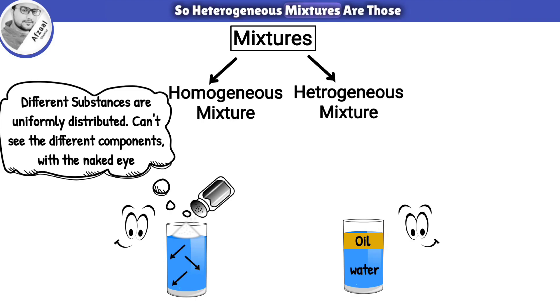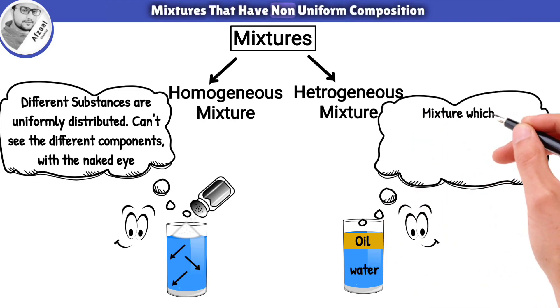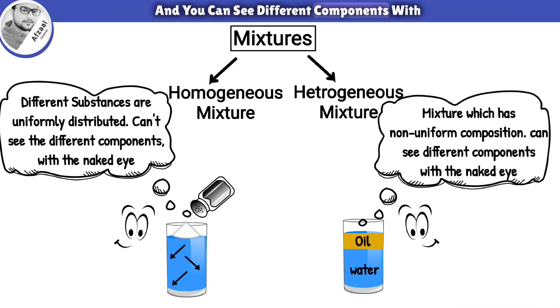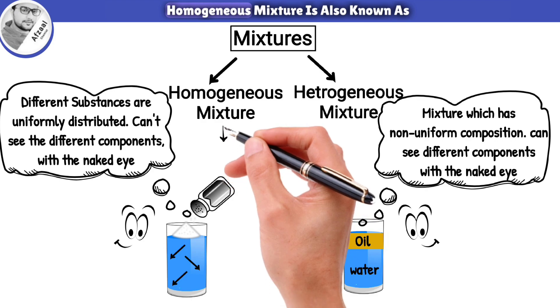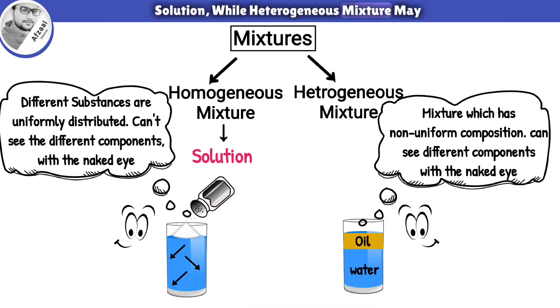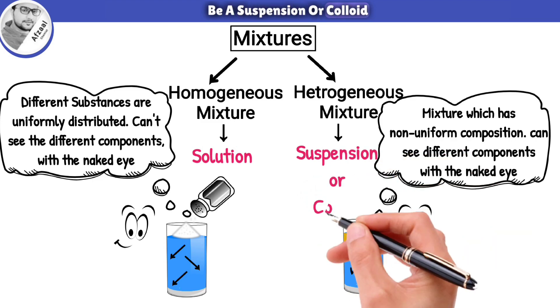So heterogeneous mixtures are those mixtures that have non-uniform composition throughout its mass and you can see different components with the naked eye. Homogeneous mixture is also known as solution, while heterogeneous mixture may be a suspension or a colloid.